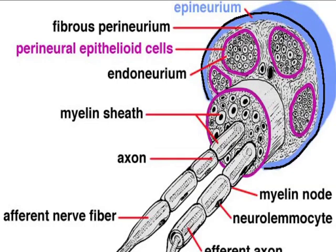This cartoon shows the connective tissue components that envelop a peripheral nerve — that is, a spinal nerve, a cranial nerve, or any of their branches. There is an epineurium that surrounds the collection of nerve fascicles that comprise the nerve. Each fascicle is surrounded by a fibrous perineurium and by perineural epithelioid cells. Within a fascicle, endoneurium surrounds individual nerve fibers.